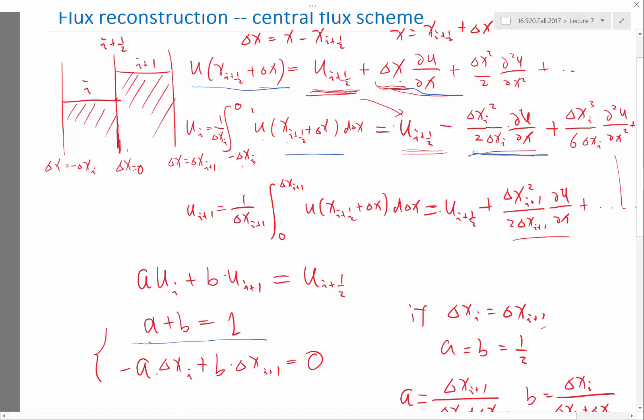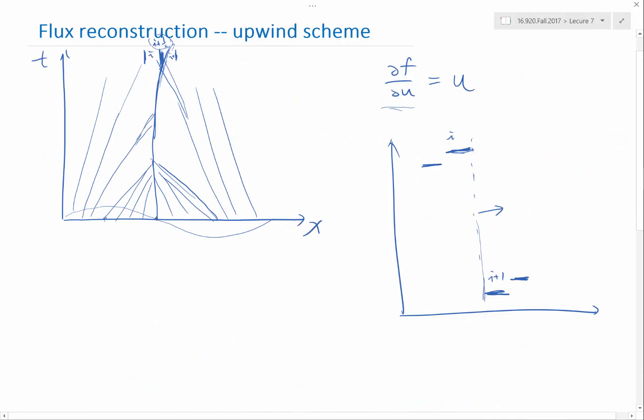Either my A is going to be equal to one if the wave travels from the left, or my B is going to be equal to one if the shockwave travels from the right, and the other one is going to be zero. So I am never going to satisfy the second condition. My scheme is only going to be first order accurate, but I am satisfying the correct physics.